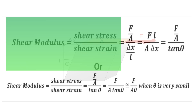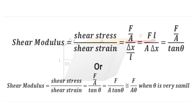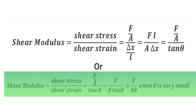The shear modulus equals shear stress divided by shear strain, where shear stress is force per unit area and shear strain is Δx/L or tan θ. So the shear modulus equals (F/A) divided by tan θ. When θ is very small, tan θ approaches θ, so the shear modulus simplifies to F divided by Aθ. This is the shear modulus derived from shear stress and shear strain.